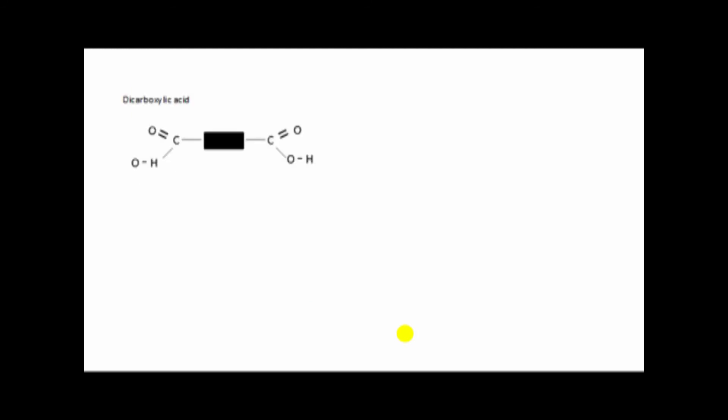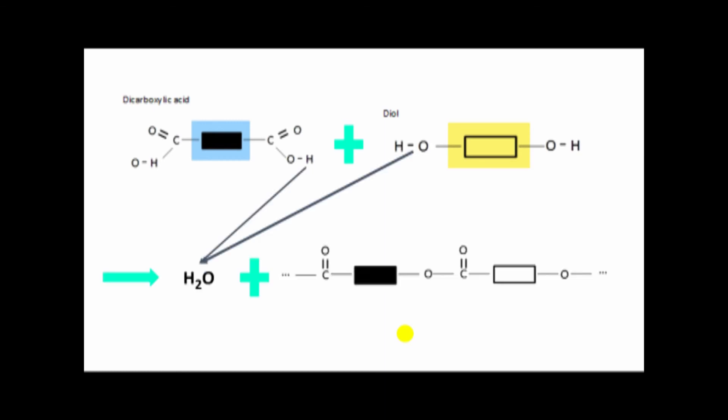Dicarboxylic acid and diol - these two react and make another polymer, terylene. Here the box is hydrocarbon. The reaction produces small molecule water. The product is terylene. Terylene functional group is COO, the ester link. So terylene is also called polyester.